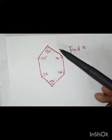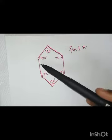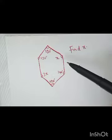So we are going to count the number of sides of the diagram. This is 1, 2, 3, 4, 5, 6. So we have 6 sides.